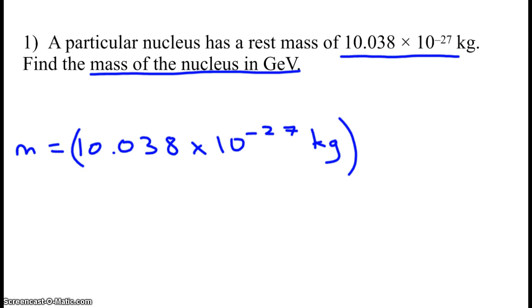And it should be gigaelectron volts C to the negative 2. That's a typo. In order to convert this, I need a conversion factor. I want to cancel out kilograms and convert to gigaelectron volts times C to the negative 2.